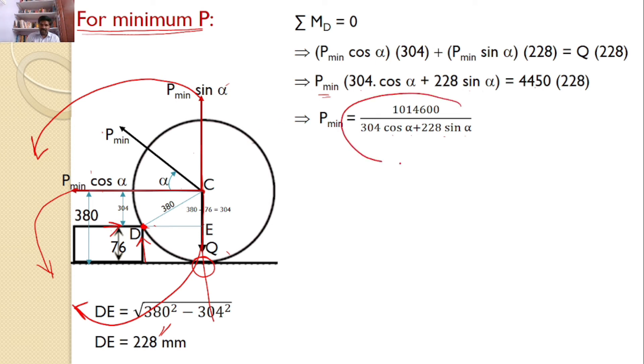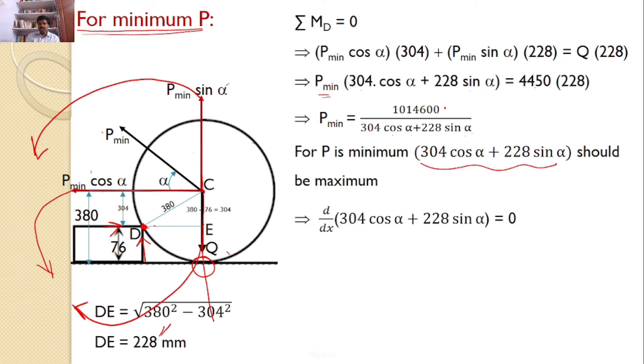Now our interest is to see that this is as minimum as possible. It should be minimum means denominator should be maximum because numerator is constant. We cannot change the numerator. Only depending upon the value of alpha, the denominator will change. Denominator should be as maximum as possible so that this will become minimum. So what is the maximum value of this? To find the maximum value, for P is minimum, this should be maximum. So for the maximum of this, differentiate that with respect to alpha. D by D alpha of 304 cos alpha plus 228 sin alpha is equal to 0.